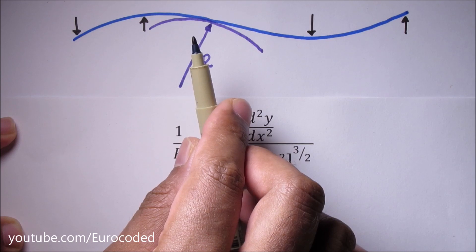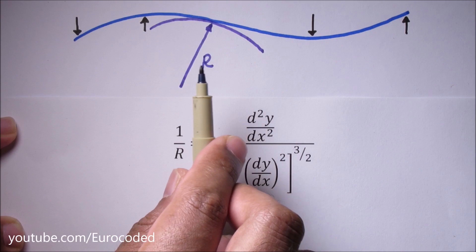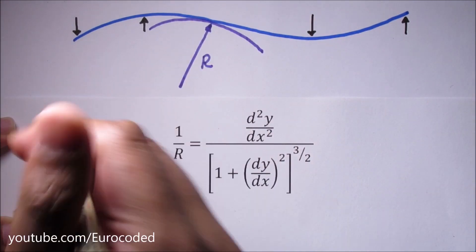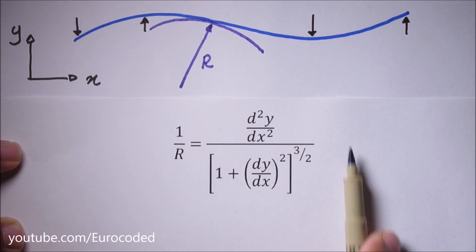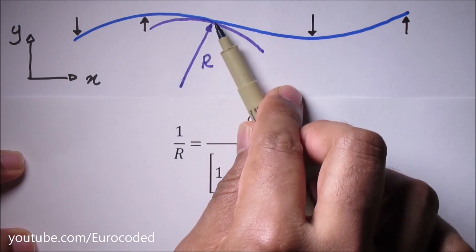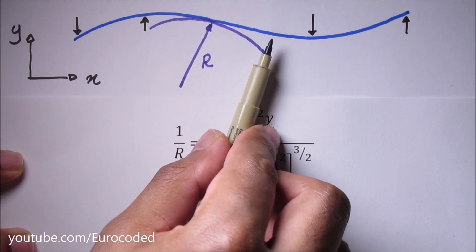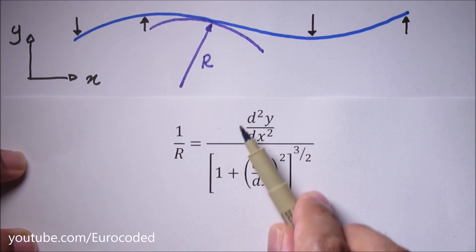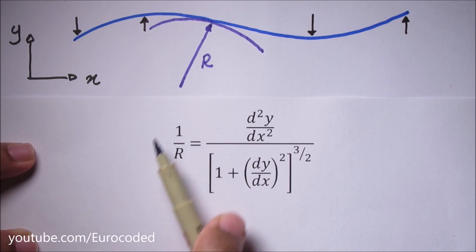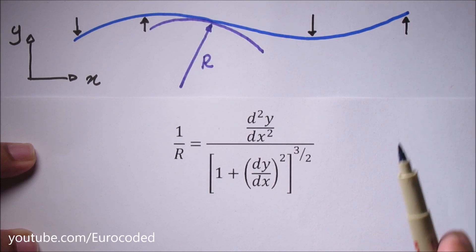Going back to elementary calculus, we can write that a curvature of a plane curve in the XY plane in the form of this expression. R is the radius of curvature, dy over dx is the slope of the curvature and this is the first derivative and this is the second derivative. If you want to know how to develop this equation, then please click on this YouTube card here or follow the link in the description box below.